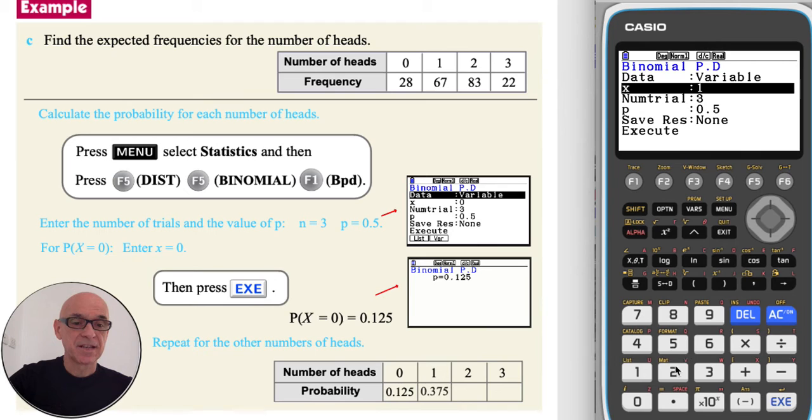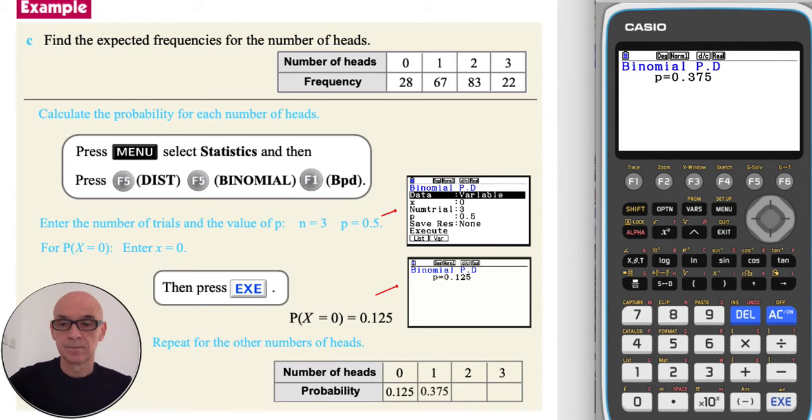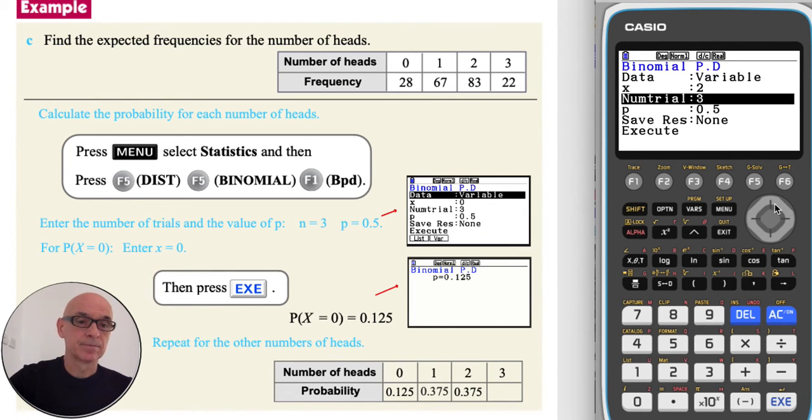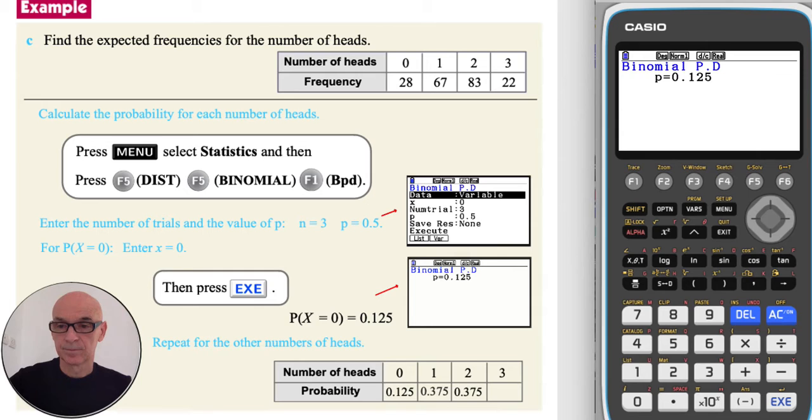For the next value of X, setting X equal to 2. For the next value of X, setting X equal to 3.